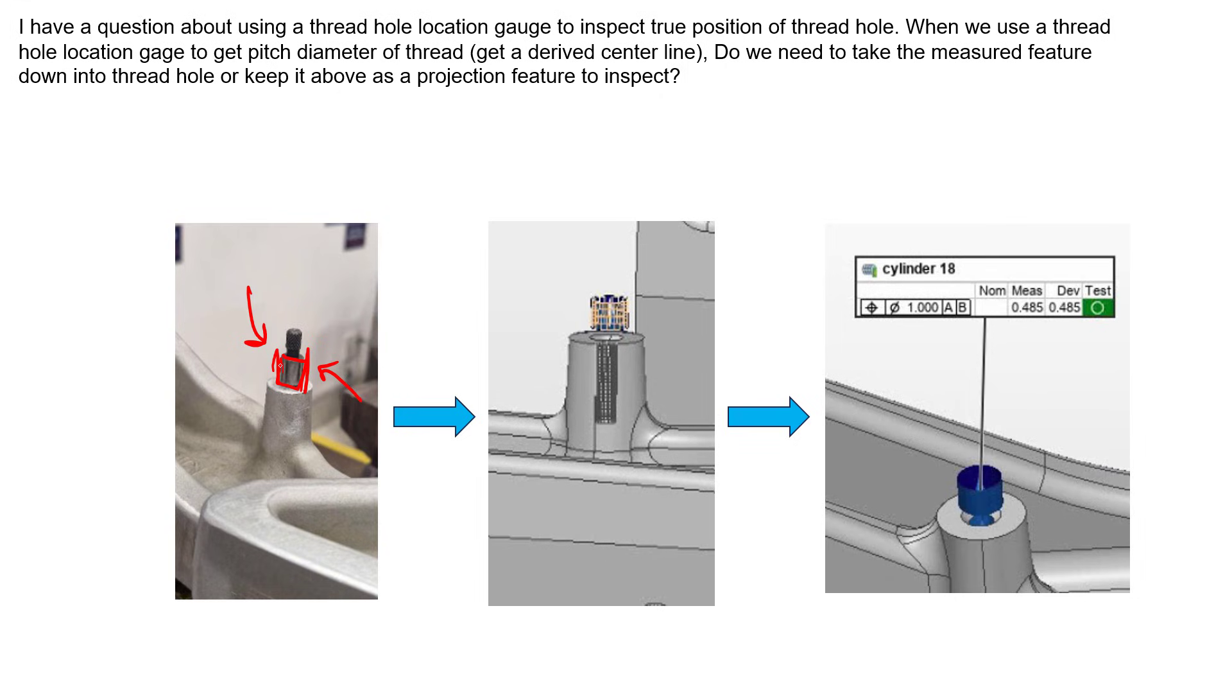Really the only way to capture the axis of that pitch cylinder diameter and not the axis of the major or minor diameters is to use a gauge like this. Because whenever you thread something into those threads and put tension on them, they'll center themselves up on the pitch cylinder diameter. Nothing actually ever touches the surface of the major or minor diameter when you thread features into themselves. That's the whole reason we use these thread gauges.